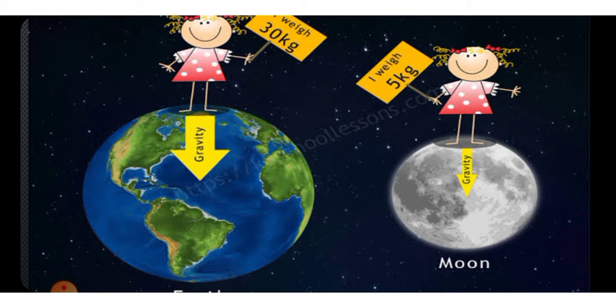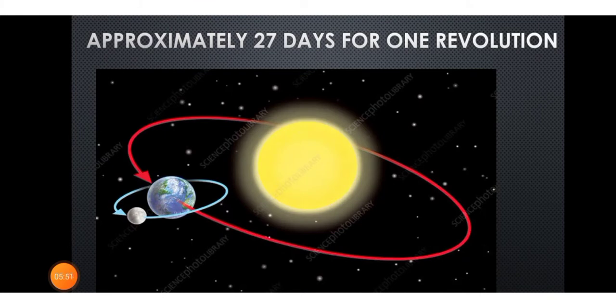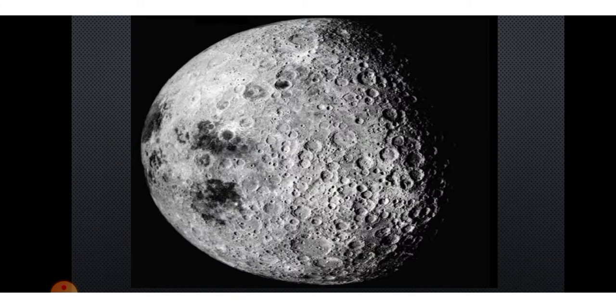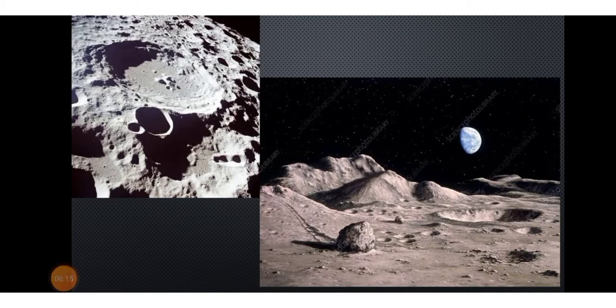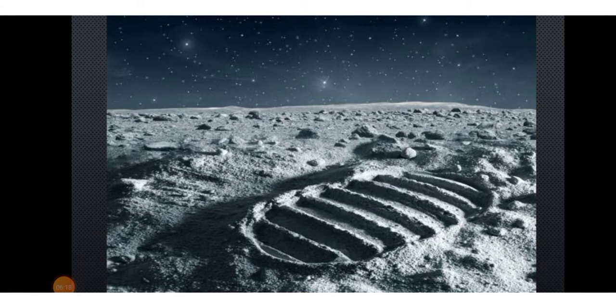Our earth has only one satellite, that is the moon. The moon moves around the earth in about 27 days. It takes exactly the same time to complete one spin. As a result, only one side of the moon is visible to us on the earth. The moon does not have conditions favorable for life. It has neither water nor air. It has mountains and craters.